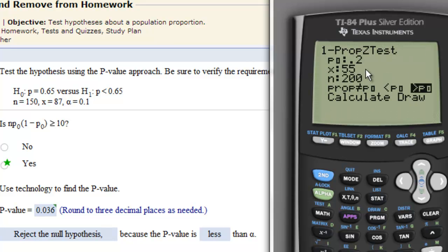Then we put in our p-naught value, that's 0.65. Then we go down to our x-value of 87, our n-value of 150. We go over to the less than, click enter, and then we go down to calculate.